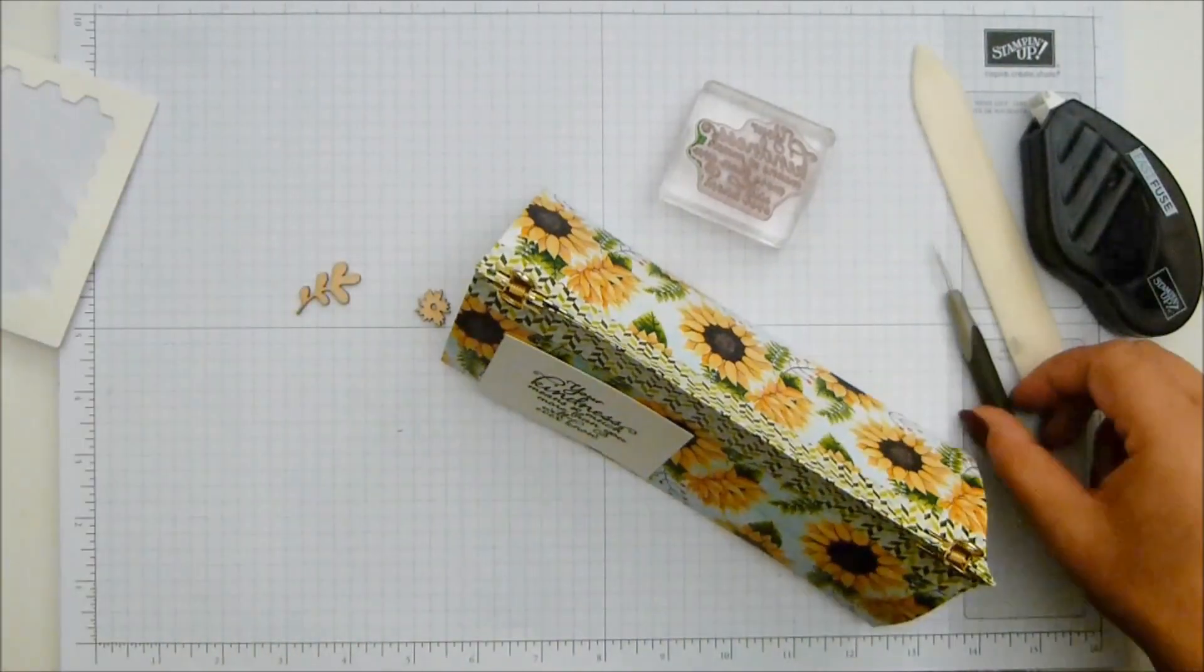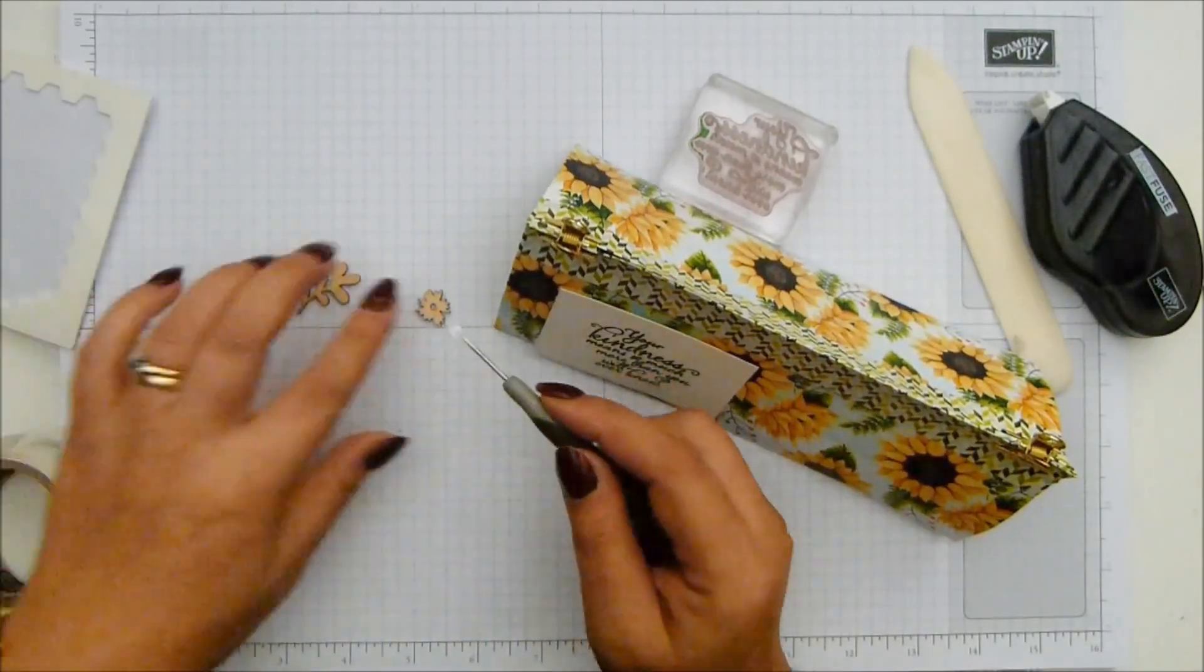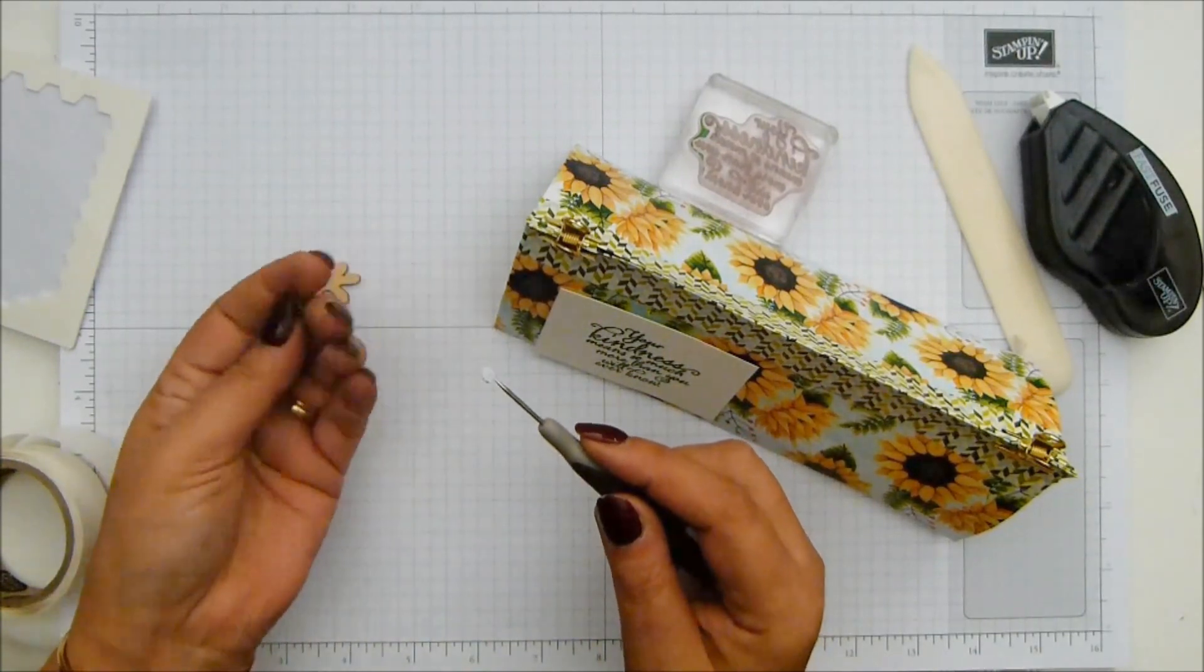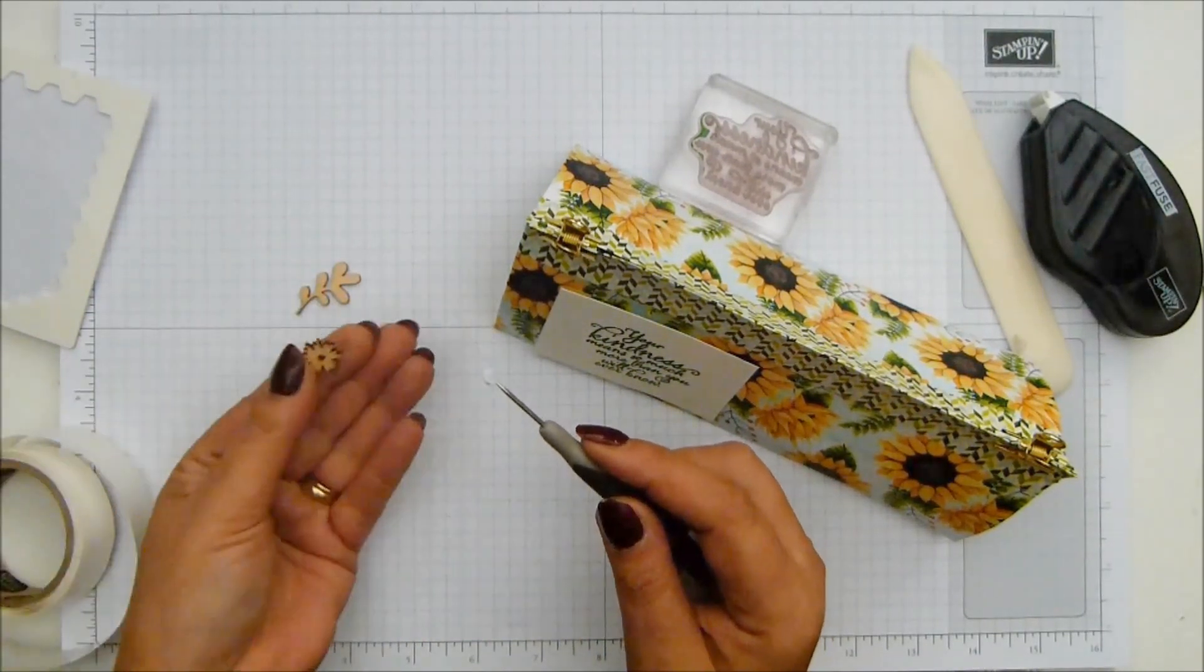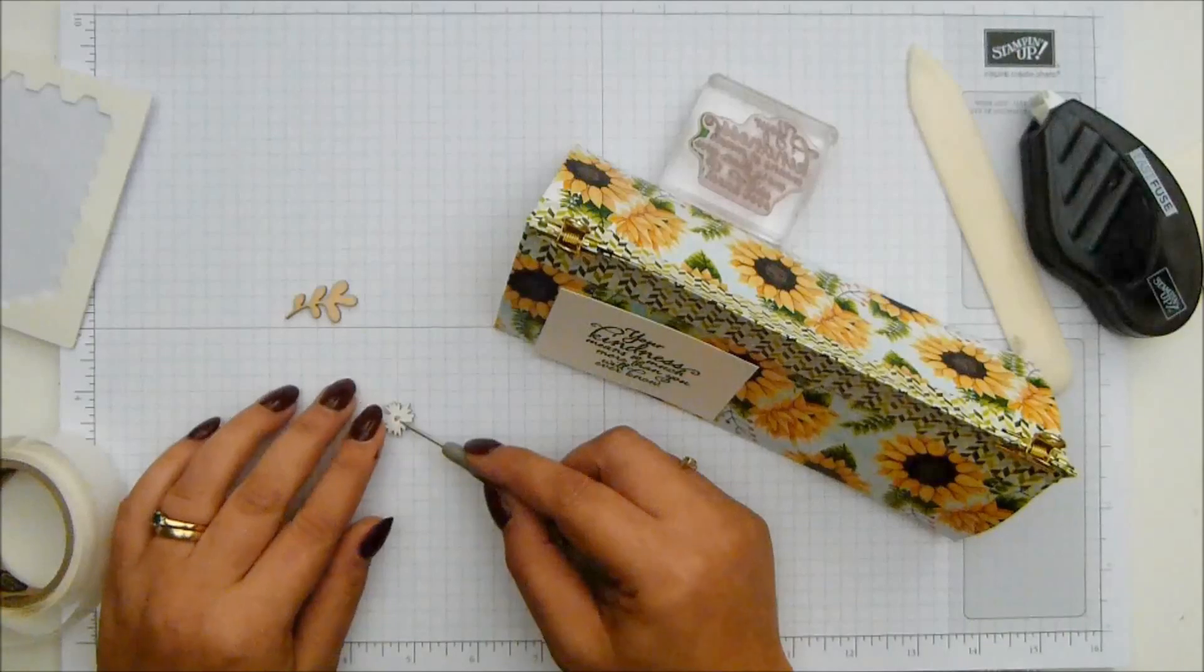And then, mini glue dots again. One on the back. Oh, these are white on one side. And natural wood colour on the other. So I'd better get that on the right side.